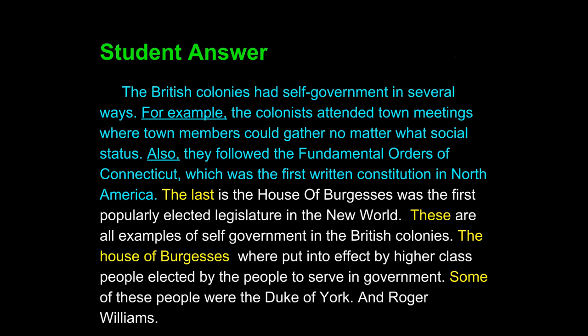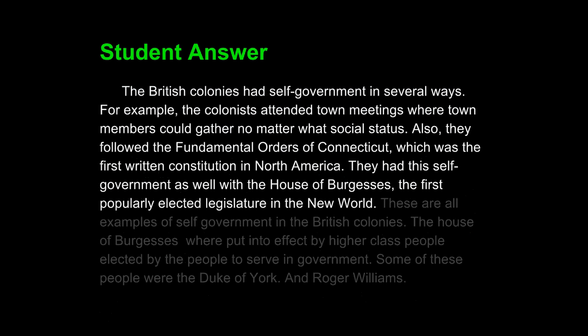If I insert these transitions, the answer improves even more: "The British colonies had self-government in several ways. For example, the colonists attended town meetings where town members could gather no matter what social status. Also, they followed the Fundamental Orders of Connecticut, which was the first written constitution in North America." Now each sentence is strong, and the transition words allow the reader to understand that we're talking about examples. They also separate each sentence as a different example. Adding a third: "They had this self-government as well with the House of Burgesses, the first popularly elected legislature in the New World."